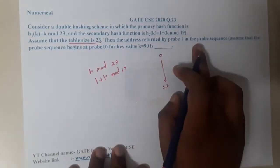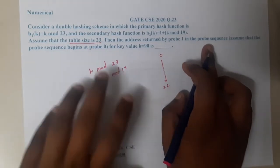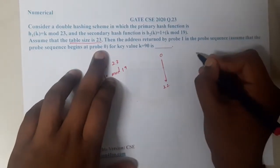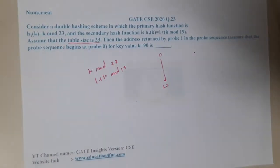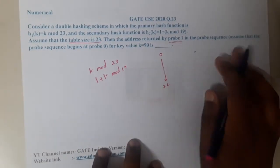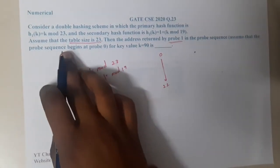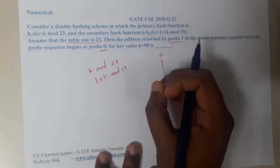So it is from 0 to 22. Then the address returned by probe 1 in the probe sequence. Basically, they are saying that there is a collision in the first case, that's why they are going to probe 1. Assuming that the probe sequence begins at probe 0, there is a collision, so we move on to probe 1.